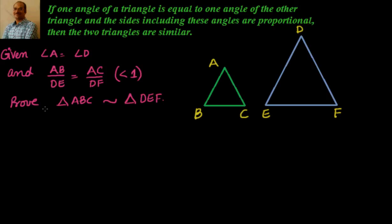Hi everyone, welcome. In the last videos we have seen AAA similarity and SSS similarity, which state that we don't need to have both corresponding angles equal and sides in proportion to show that triangles are similar. If we know that corresponding angles are equal, then automatically the sides are in proportion, and also if the sides are in proportion, then the corresponding angles are equal.